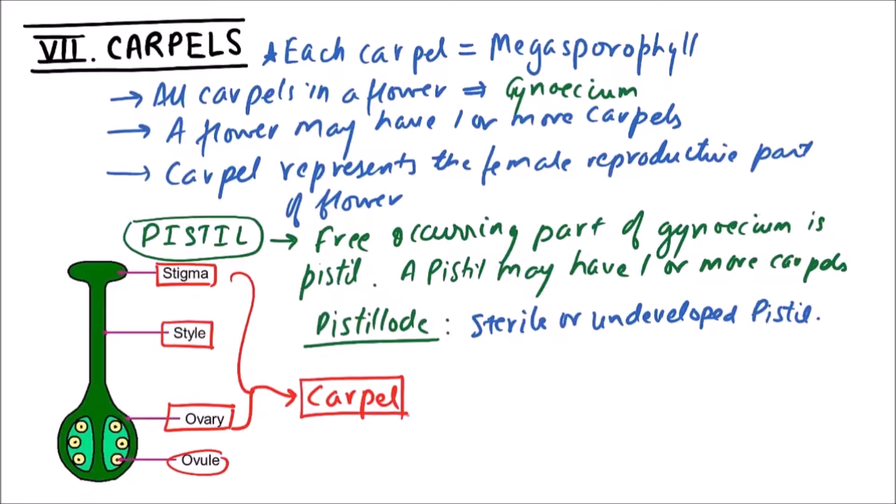Stigma is meant for receiving the pollen grains. Style connects the Stigma and Ovary. Ovary contains the ovules.